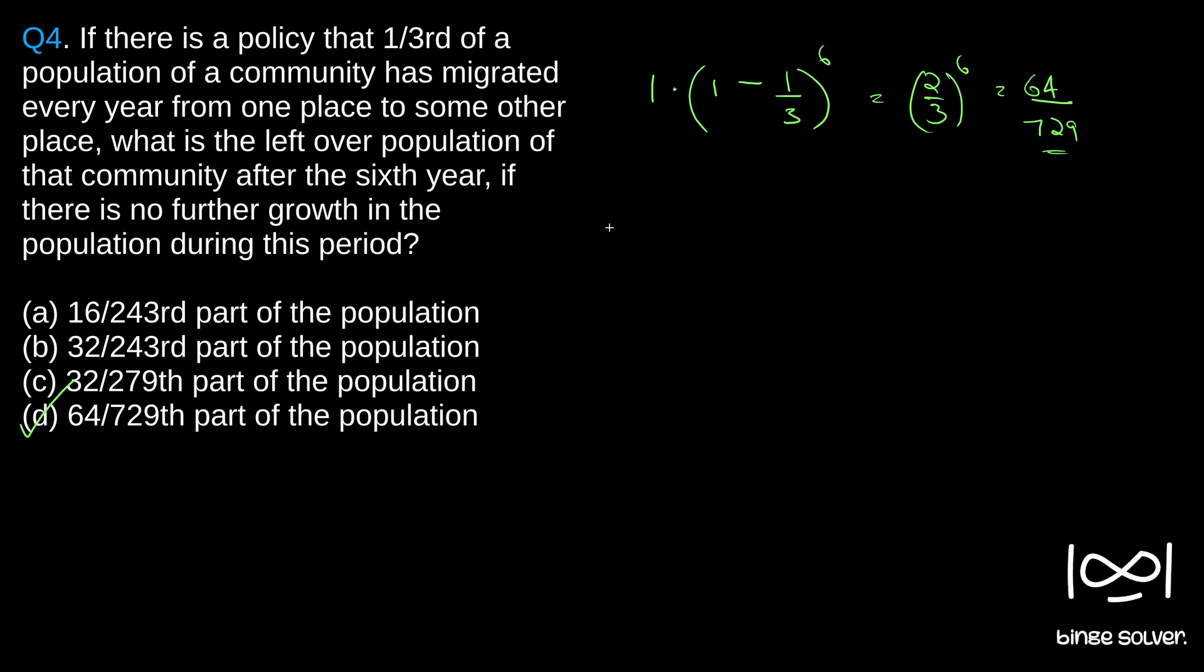No need to by heart that formula and all. I will show you why this is the case. Say first we will assume the initial population was 1. Then what happens after 1 year? Year 1, 1/3 population migrates. So that means minus 1 by 3 is the population, the total population after the first year. First year: 1 minus 1 by 3 is the final population.